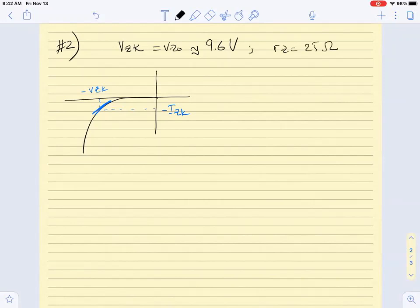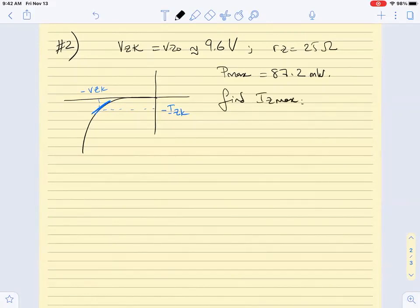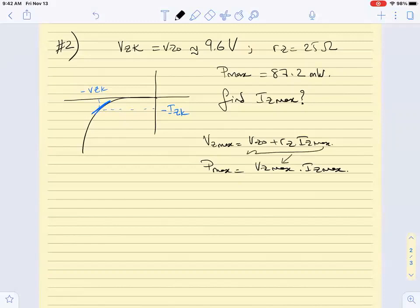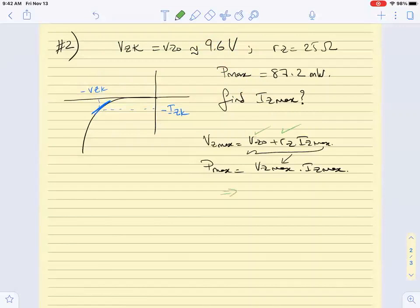And Rz is given to me to be equal 25 ohms in this example and I am told that the power rating Pmax of the zener diode is found to be 87.2 milliwatts and we want to find the value of Iz max. In this scenario we know the relation between any Vz and I so Vz max equals Vz 0 plus Rz times Iz max and we know that the power is equal to Vz max times Iz max. So I can use this equation here plug it here because I have Vz 0 and Rz and I will solve for Iz max and in this scenario I get Iz max to be equal to 8.8 milliamps.